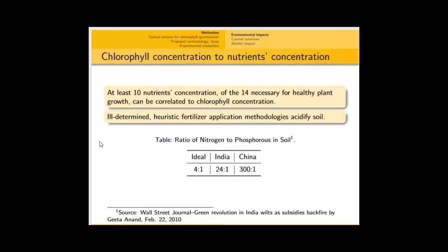However, since most countries are still using ill-determined and heuristic fertilizer application methodologies, that has resulted in significant acidification of soil. As per a Wall Street Journal report, the ideal ratio of nitrogenous to phosphorus in soil is supposed to be 4 is to 1, but India has a ratio of 24 is to 1, while China has a ratio of 300 is to 1.